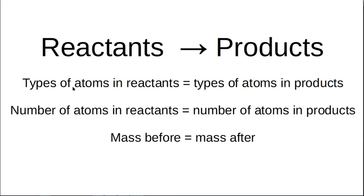If you've got sodium and chlorine in the reactants, you will have sodium and chlorine in the products. Whatever atoms you've got in the reactants are what you're going to get in the products. We are doing chemistry, not witchcraft. So whatever atoms we have in the reactants will end up in the products.